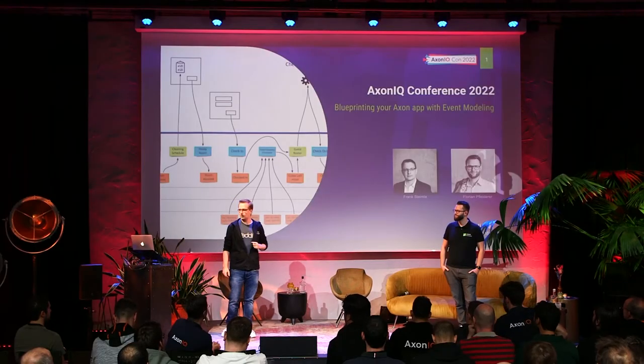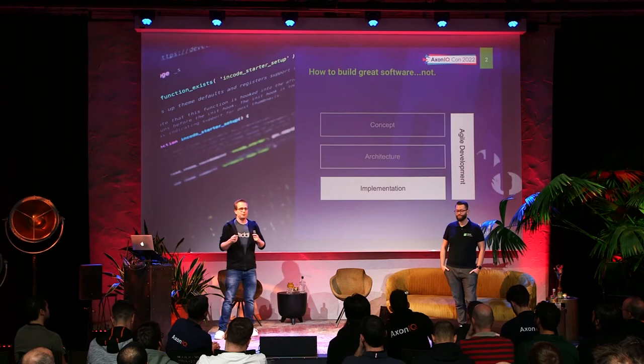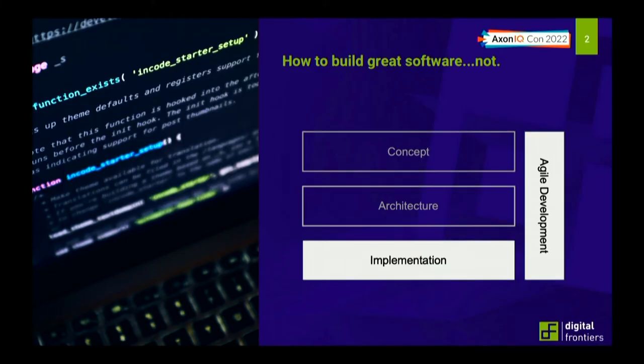This is why our talk is called 'Blueprinting your Axon App with Event Modeling.' Before we really talk about event modeling, let's go back to the dark ages. Many software projects started with a database model. Why? Because we, as developers, are used to writing database models — we like working with databases, it's our comfort zone.